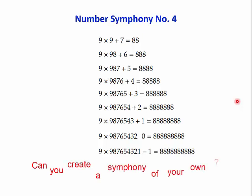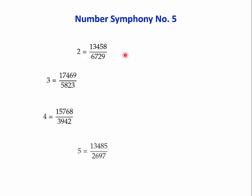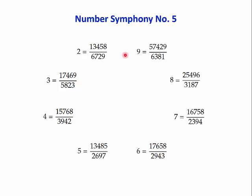Here's a different kind of symphony pattern. You'll see that you've got a fraction equal to two — so the top number must be double the bottom number. But what's happened is you've got all the digits from one to nine: one, two, three, four, five, six, seven, eight, nine. Can we do that with other numbers — for example, three? Yes. And four, five, six, seven, eight, nine — all using the digits one to nine.